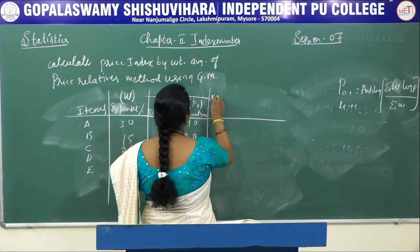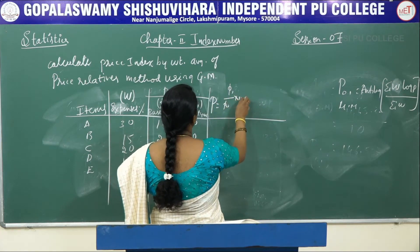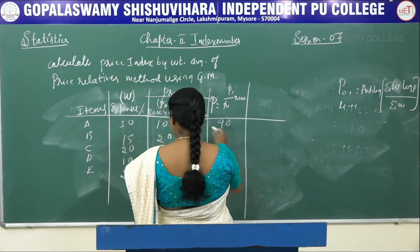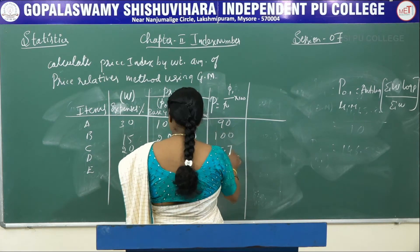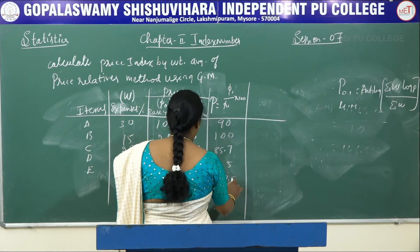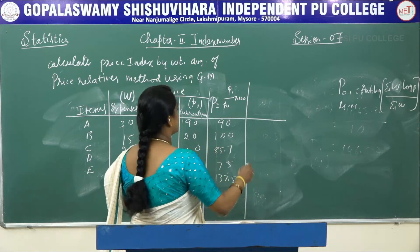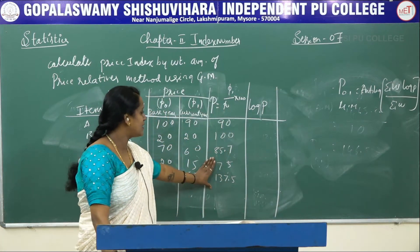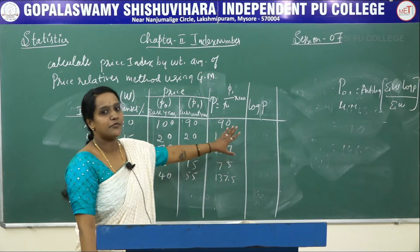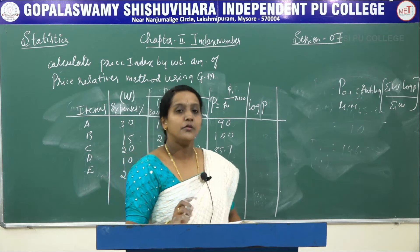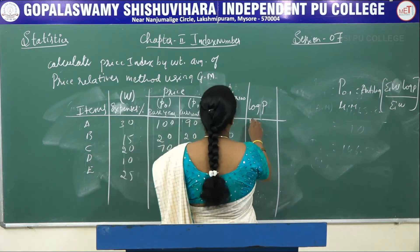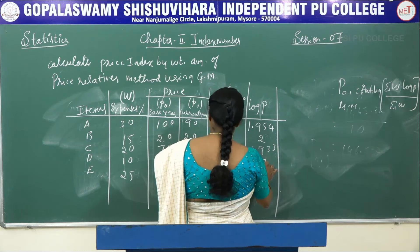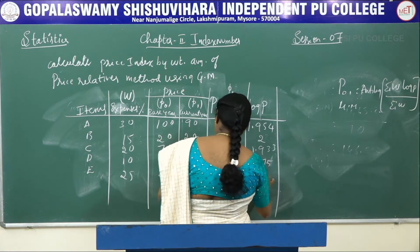To find price relative using GM we have the formula: anti-log of summation of W into log P divided by summation of W. Again in this formula we will not multiply by 100 because in the table we already multiplied 100 when finding the price relative value. First step is find capital P, that is P1 by P0 into 100. The price relative values are 90, 100, 85.7, 75, and 37.5. Next we find log P — the log values are 1.5429, 1.875, and 2.138.